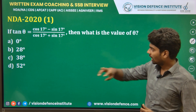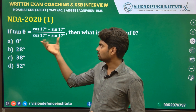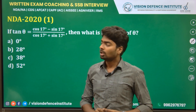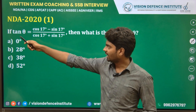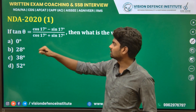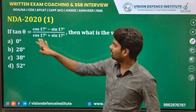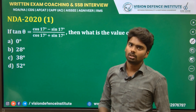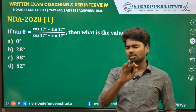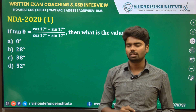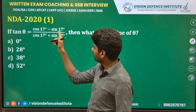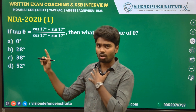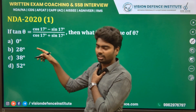We have to find the value of θ on the right-hand side. Since we have a tan function on the left-hand side, let's try to convert this into tan θ. We know that sin divided by cos is tan, so let's divide every term by cos17°.